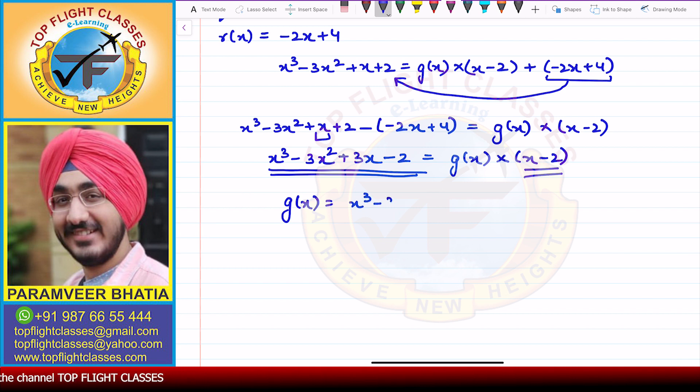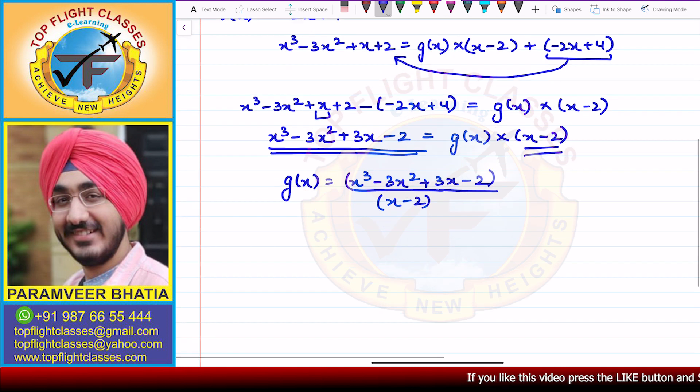We will divide x³ - 3x² + 3x - 2 by x - 2, and we will get g(x). Now we have to solve this, so we will get g(x).